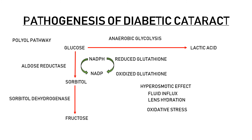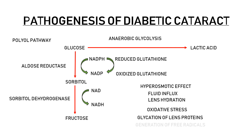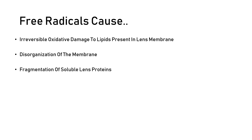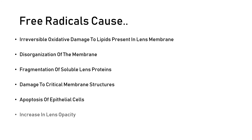Sorbitol is further converted to fructose by the enzyme sorbitol dehydrogenase. Accumulation of fructose, like sorbitol, also increases the osmotic pressure inside the lens. This step also leads to depletion of cofactor NAD, contributing to oxidative damage. Additionally, increased glucose levels in aqueous humor can cause glycation of lens proteins, leading to generation of free radicals. Formation of free radicals causes irreversible oxidative damage to lipids in the lens membrane, inducing disorganization of the membrane, fragmentation of soluble lens proteins, damage to critical membrane structures, and apoptosis of epithelial cells — leading to increased lens opacity and changes in the refractive properties of the lens.